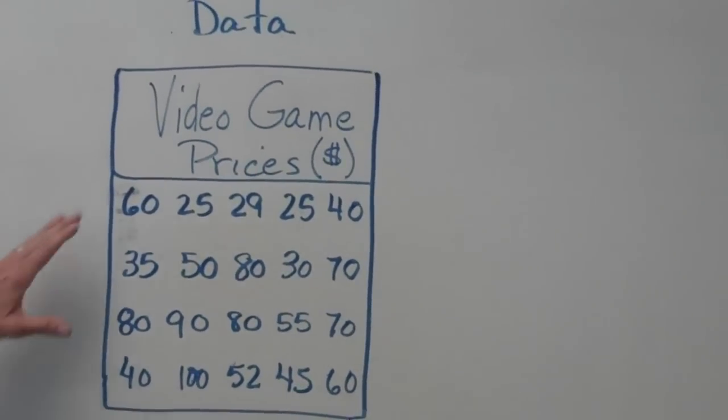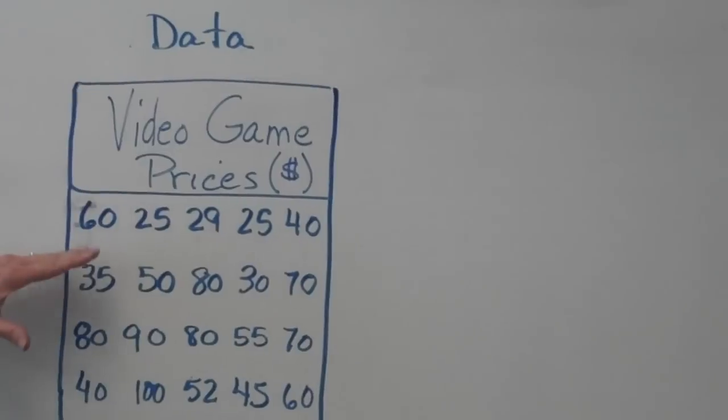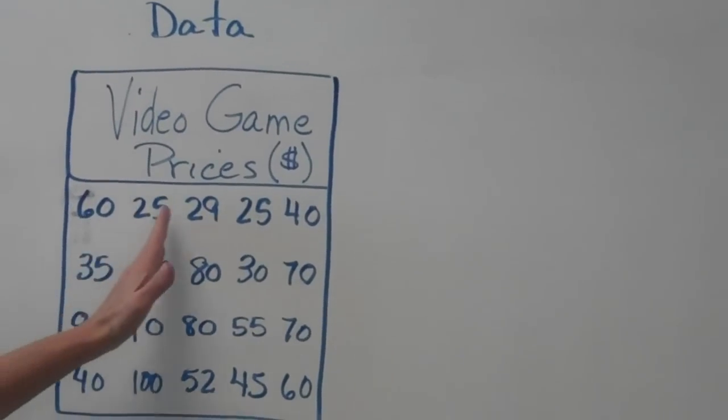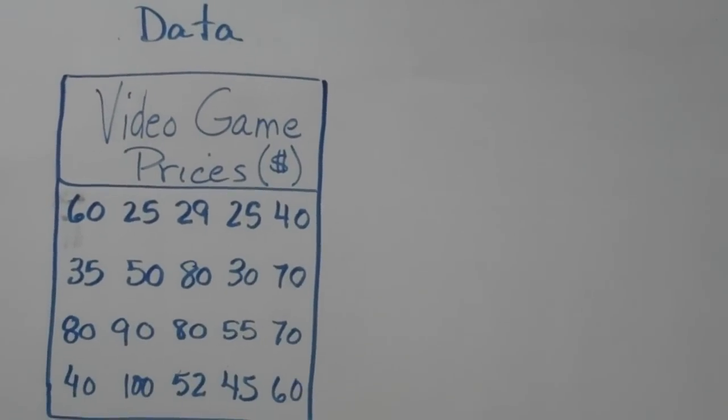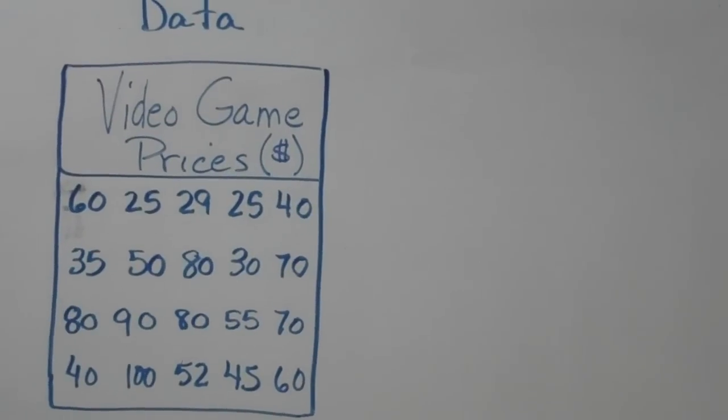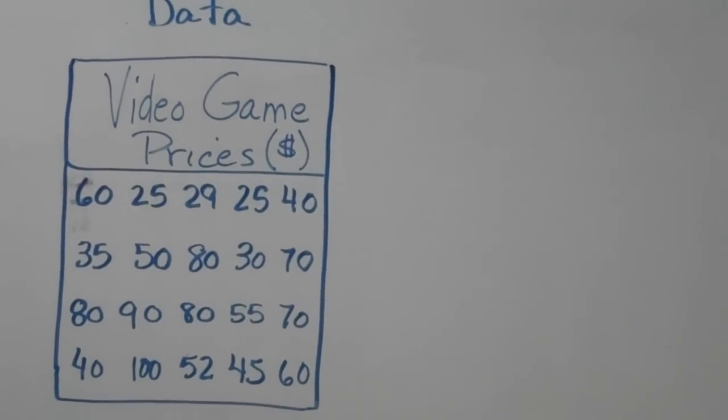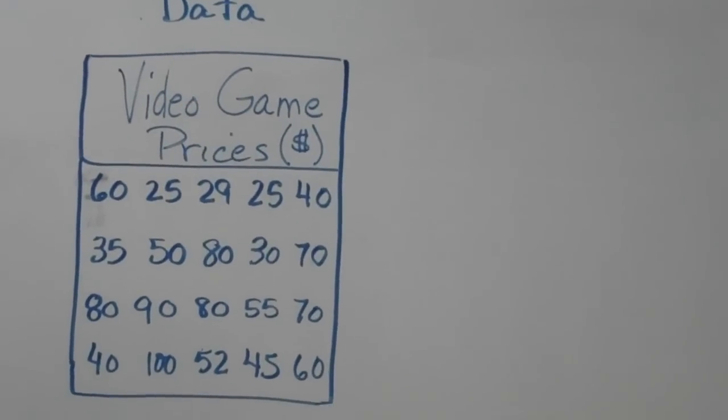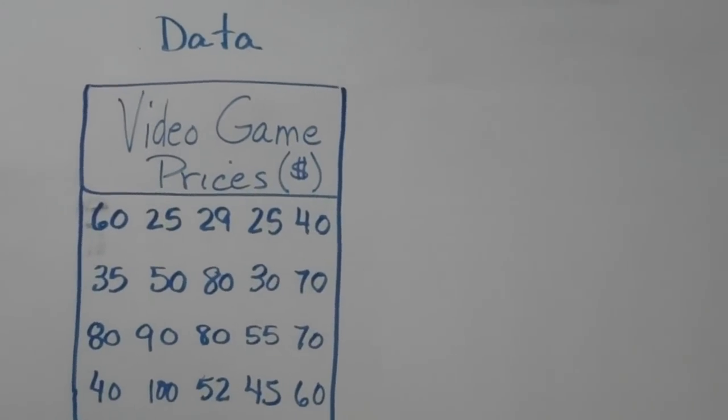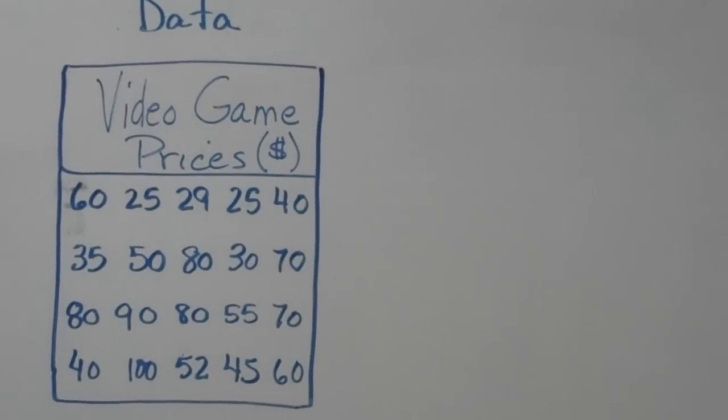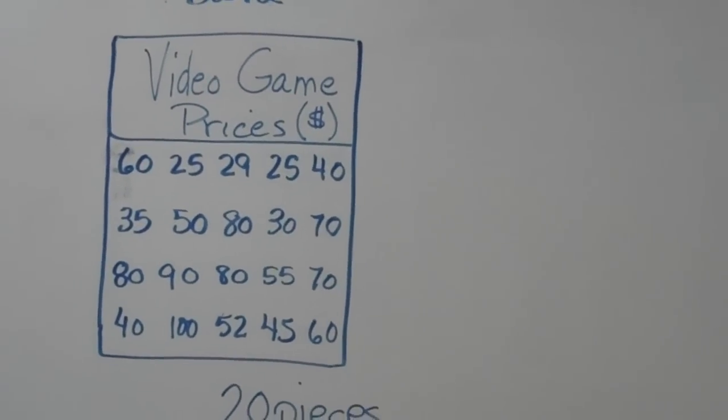As you can see, we've got four rows of information with one, two, three, four, five columns, which means we have four times five pieces of information or pieces of data. So that is a total of 20 pieces of data. This will be important to us a little bit later on. You'll see how we'll use that information.